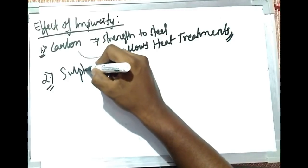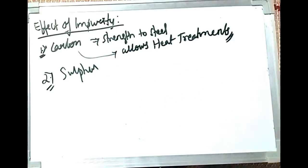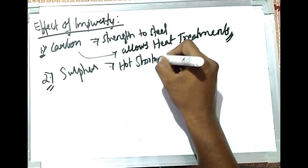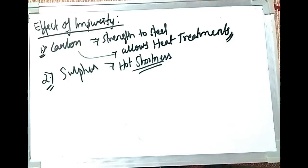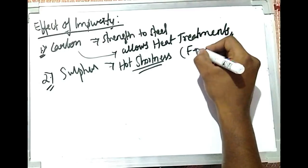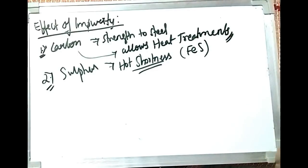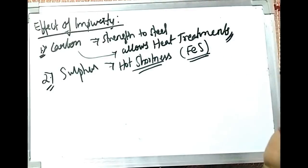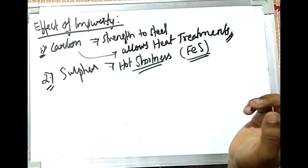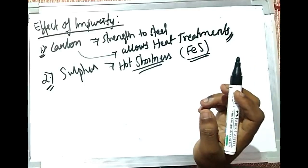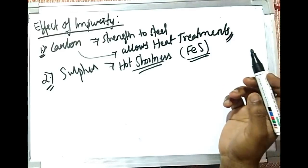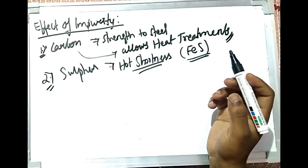The major impurity is sulfur. Sulfur segregates during solidification and causes hot shortness. Hot shortness occurs because the formation of compounds like FeS during solidification creates inclusions that prevent uniform solidification. These inclusions also reduce weldability and corrosion resistance of the steel. Sulfur is the most dangerous impurity element.